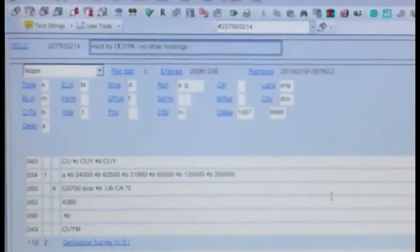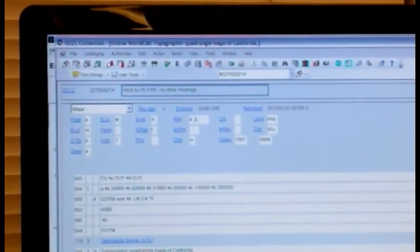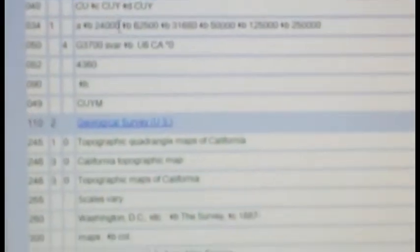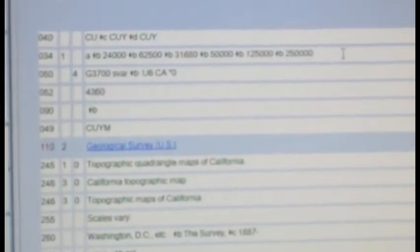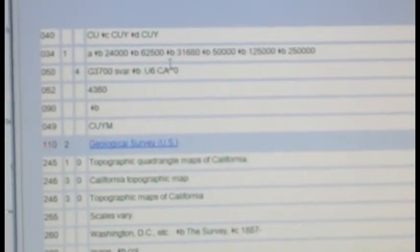So I'm gonna talk a little bit about some of the fields here and what makes a map record a map record. Obviously the first one is you can see the work form is maps. That gives you a whole different set of fixed fields and variable length fields that you need, that need to be filled in a different way. One of the most important ones I think are the scale fields. So in the variable length here we have the 034, which is a machine readable designation of scale and the bounding coordinates for all of the maps in this series. And that pairs up with the 255.